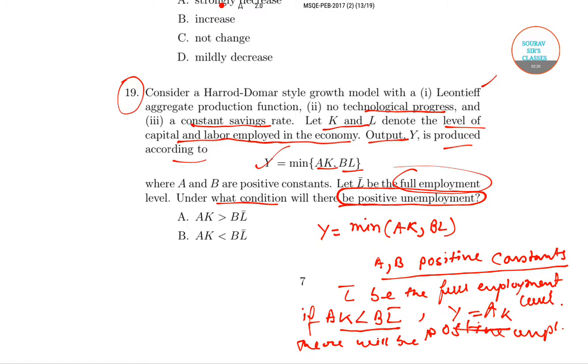We would conclude that option B is the right answer for question number 19. So in today's class we solved MSQE PEB 2017 question paper question number 19.